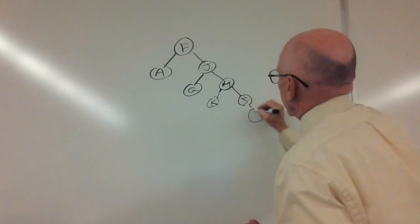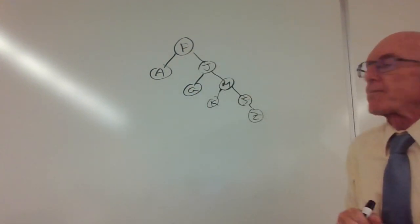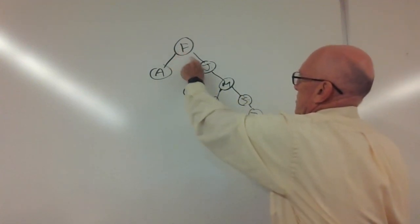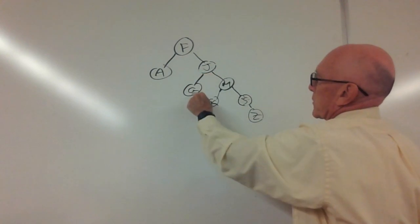Now, a more complicated removal is if we want to remove this node, France. What we're going to do is we're going to find the successor node, which means we have to find the minimum right child, which is G.